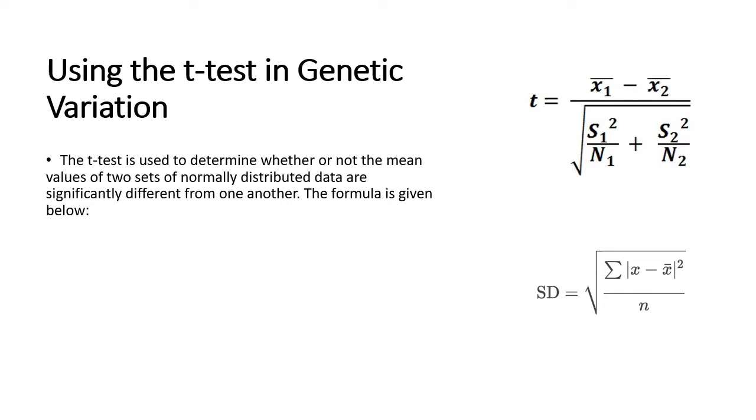The T-test is used to determine whether or not the mean values of two sets of data are significantly different from each other. In other words, when you have two sets of data, you are able to check for yourself if these two data sets are different from each other significantly, and the T-value is what enables us to do this.